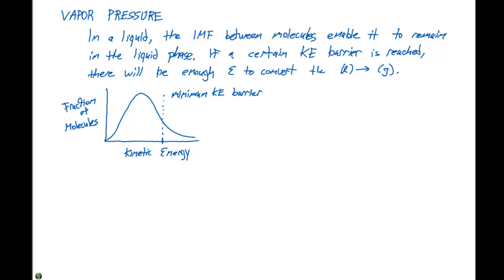For the molecules to go from a liquid to a gas. So if this is a low-temperature substance, we have liquid molecules here on the left side of this dotted line, and on the right side we have our gaseous molecules. Now, when we heat this, our curve is going to shift a little bit.